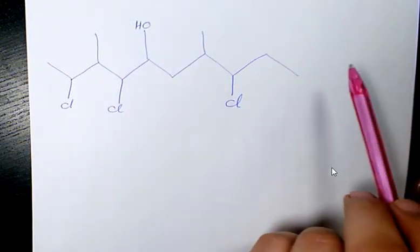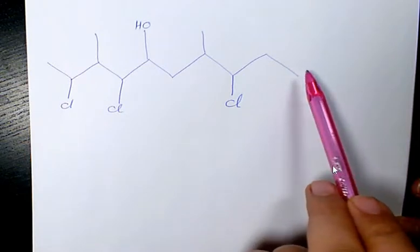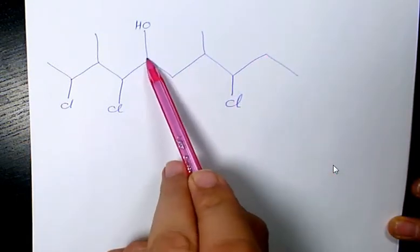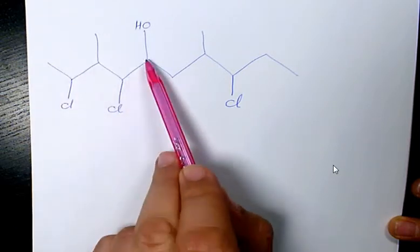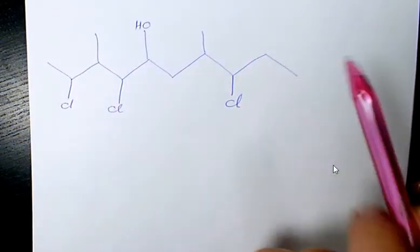How many carbons we have on the main branch? 1, 2, 3, 4, 5, 6, 7, 8, 9, 10. So we are really dealing with decane.